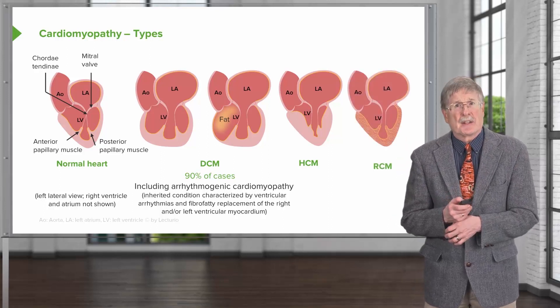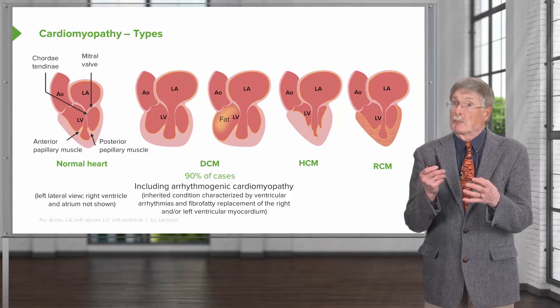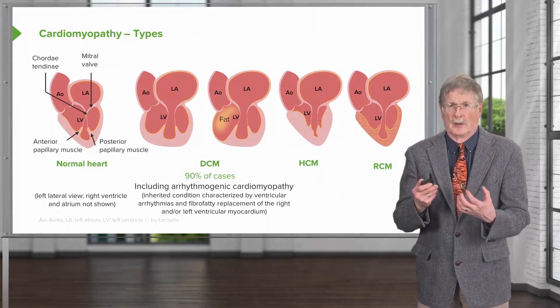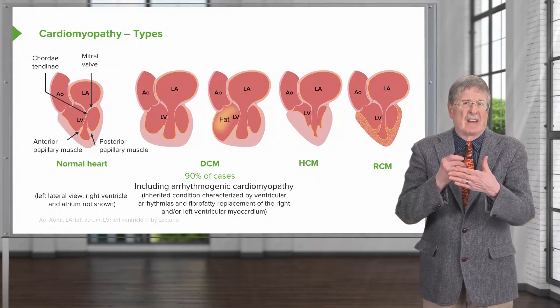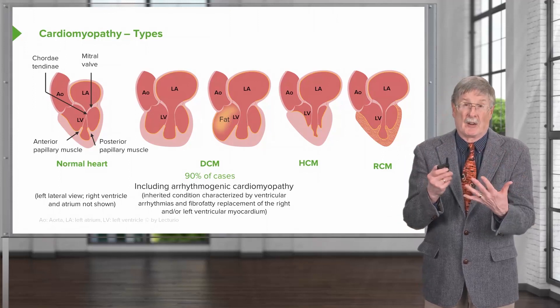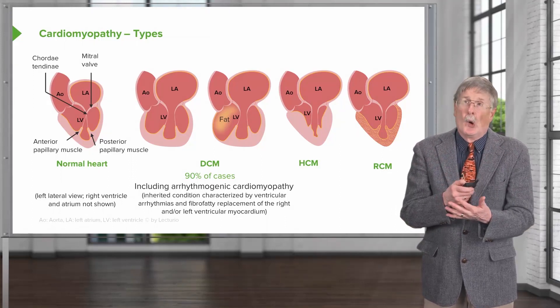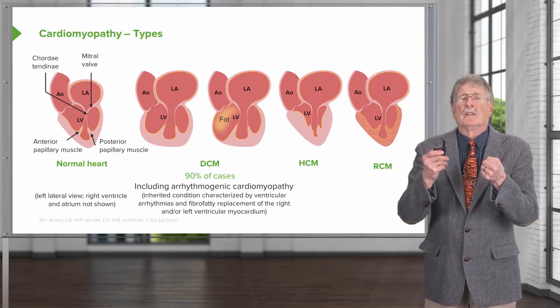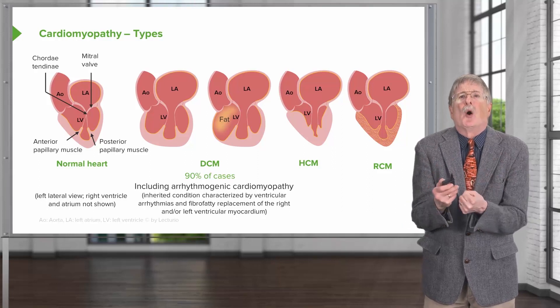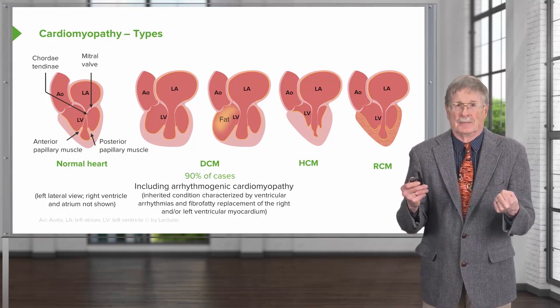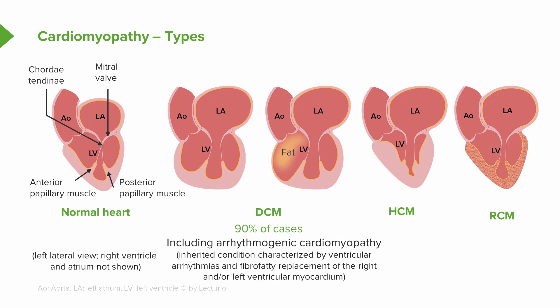In restrictive cardiomyopathy, the chambers look pretty normal and the wall thickness looks pretty normal, but because the myocardium has been infiltrated with various things like fibrous connective tissue or amyloid, the walls are stiff and don't relax very well. We'll cover each of these basic pathophysiologic forms — dilated, hypertrophic, and restrictive — and discuss their etiologies and consequences.